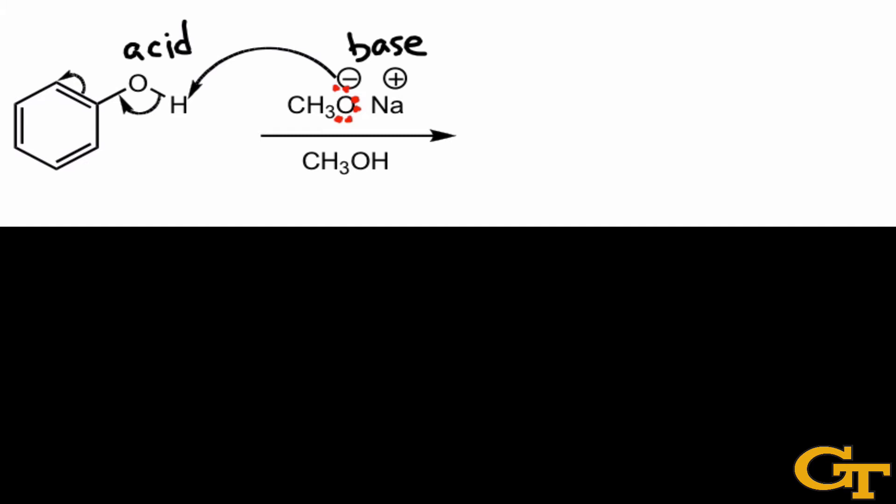So one of those lone pairs, I'll go ahead and highlight it in blue, is forming a bond to the hydrogen in phenol. That's what's implied by this curved arrow. What we're going to do when we draw the products is draw a bond between the oxygen of CH3O- and that hydrogen. Now, were we to do that and nothing else, the hydrogen would have two bonds, right?